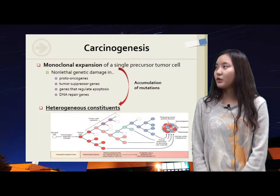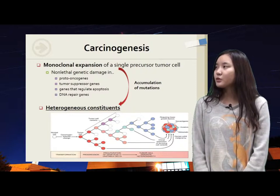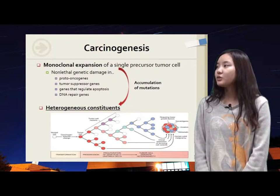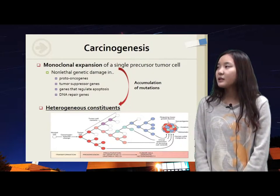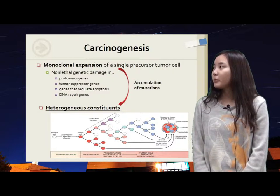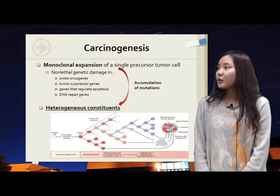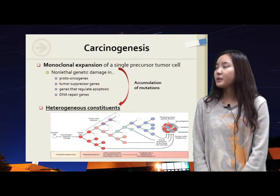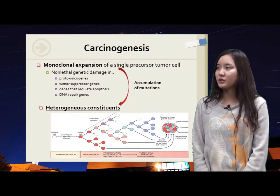Carcinogenesis on a molecular basis works as follows. A single precursor tumor cell with critical genetic damage in proto-oncogenes, tumor suppressor genes, apoptosis-regulating genes, and DNA repair genes makes a monoclonal expansion. Then there can be enough accumulation of mutations so that monoclonal expansion develops into heterogeneous constituents.